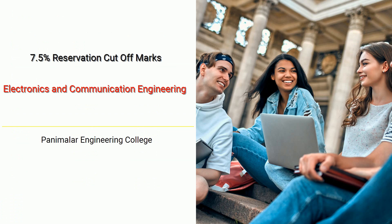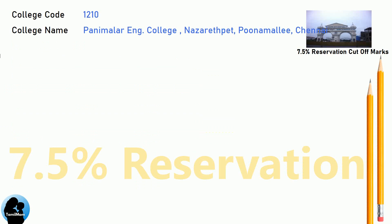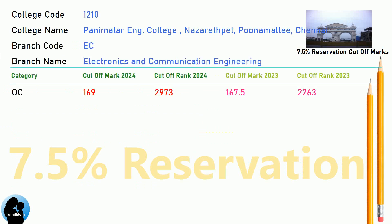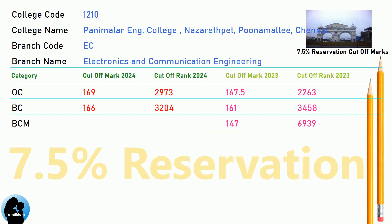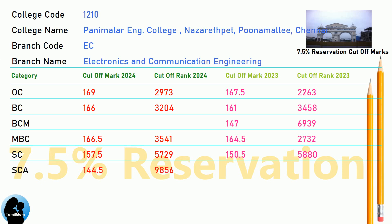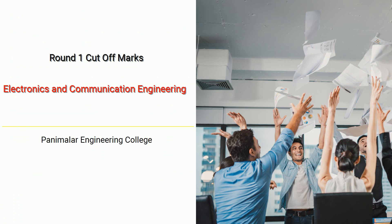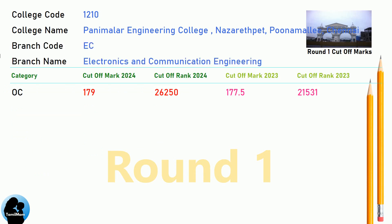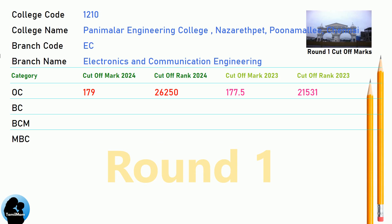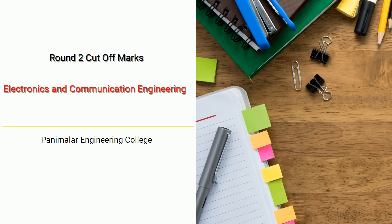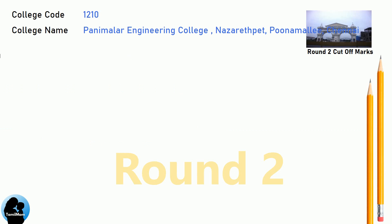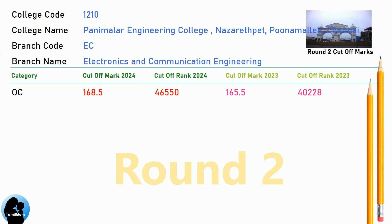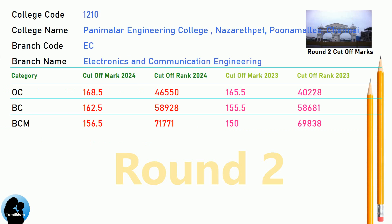TNEA 7.5 Reservation Cut-off for Panimalar Engineering College in Electronics and Communication Engineering. TNEA 8.5 Reservation Cut-off for Panimalar Engineering College in Computer Science and Engineering. TNEA 9.5 Reservation Cut-off for Panimalar Engineering College in Computer Science and Engineering.